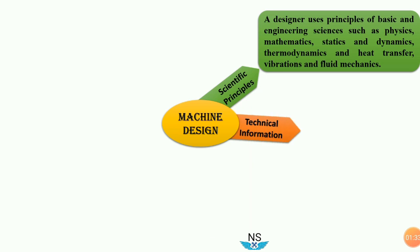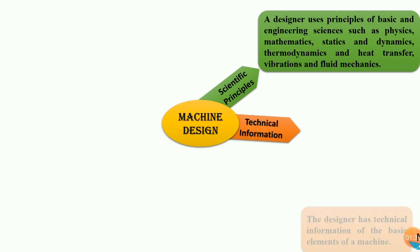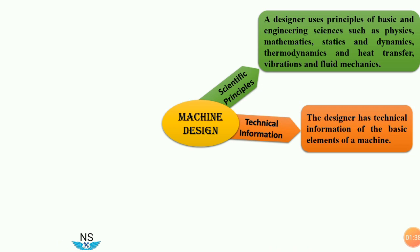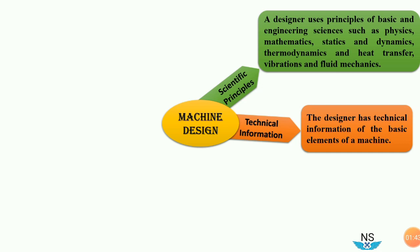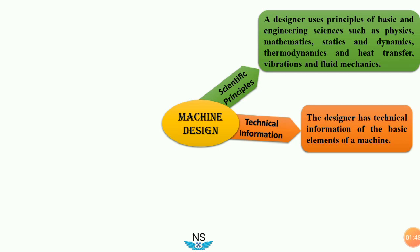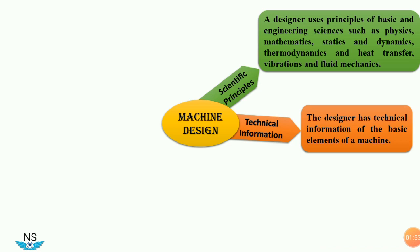The second component is technical information. The designer has technical information of the basic elements of a machine. Some of the examples of basic elements are shafts, keys, couplings, springs, fasteners, nuts, and bolts. These are some of the basic elements of a machine.